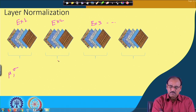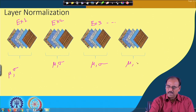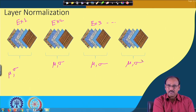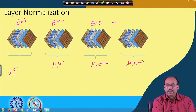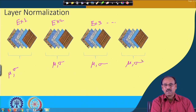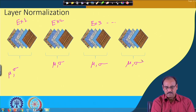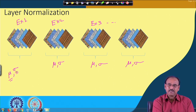For example 2, another mean and standard deviation is computed; for example 3, another set is computed. In batch normalization, the dimensionality of the mean vector equals the number of channels, because for every channel you compute one mean and one standard deviation. In layer normalization, since mean and standard deviation are computed from all the feature maps or all channels of a single example, the dimensionality of the mu vector and sigma vector is the same as the number of channels.